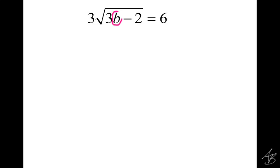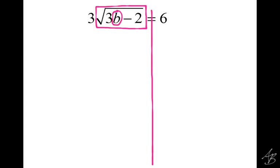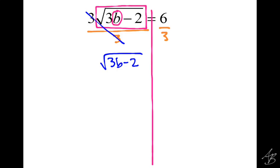So again, we'll set it up here: circle the variable, draw the line of equality, and box the square root. Remember that box is reminding us to get the square root by itself before we can get rid of it. So what do I need to get rid of that's outside the box? The 3. I need to get rid of that 3, and I'm going to do that by dividing by 3 on both sides. A lot of people forget to bring the square root down on this step — don't forget that. We didn't cancel the square root out yet, so we need to keep it with us.